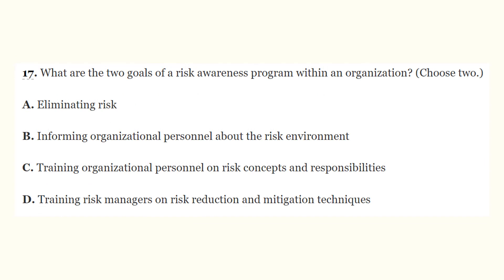Question number seventeen: what are the two goals of a risk awareness program within an organization? Choose two. A) eliminating risk, B) informing organizational personnel about the risk environment, C) training organizational personnel on risk concepts and responsibilities, D) training risk managers on risk reduction and mitigation techniques. The correct answers are B and C. A risk awareness training program is designed to train organizational personnel on risk concepts and their roles and responsibilities, and to inform all personnel about the risk environment in which the organization resides.